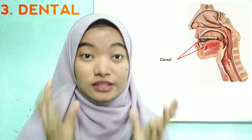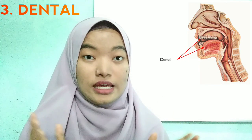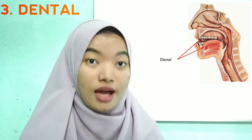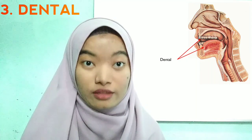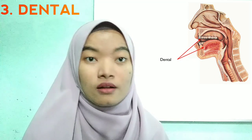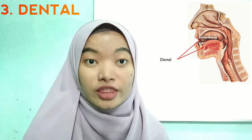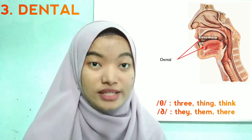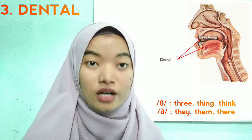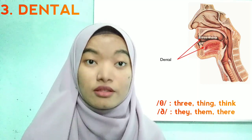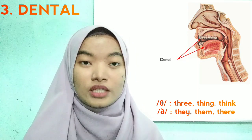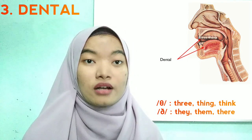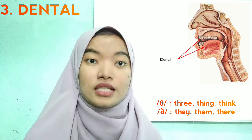Dental sounds are formed with the tongue tip behind the upper front teeth. They include the th sounds. Examples for voiceless th sounds are: three, thing. Examples for voiced th sounds are: they, them, their.